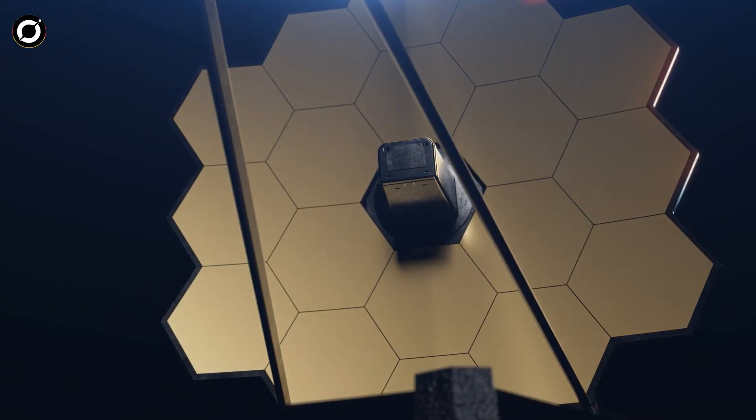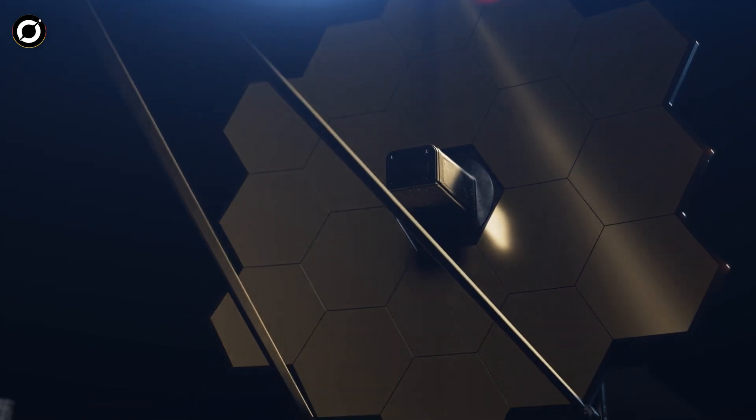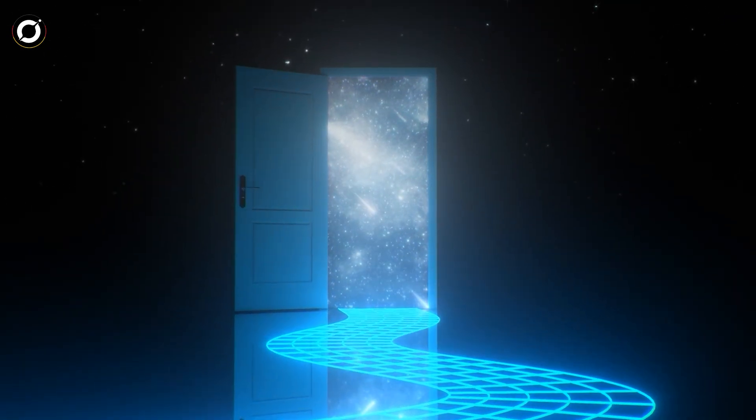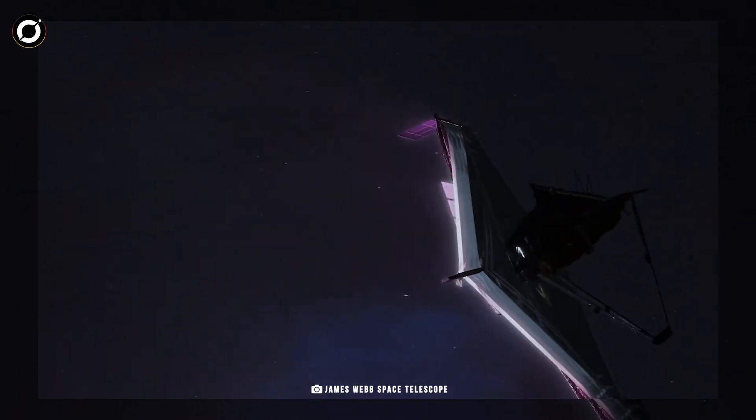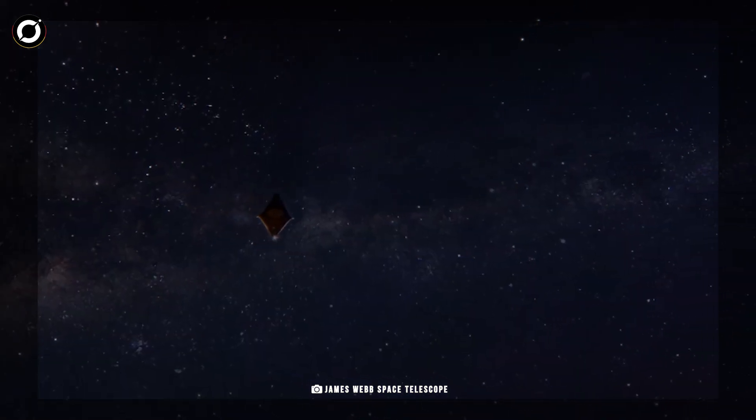Das James Webb Weltraumteleskop ist sowohl ein Teleskop als auch eine Art Spiegel. Während die Welt ihr einjähriges Jubiläum feiert, ist es wichtig, sich daran zu erinnern, dass Webb wie die Zeitmaschine der Menschheit ist. Jeder alte Stern und jede frühe Galaxie, die wir durch Webb betrachten, ist Zeuge der wachsenden Jahre des Universums.